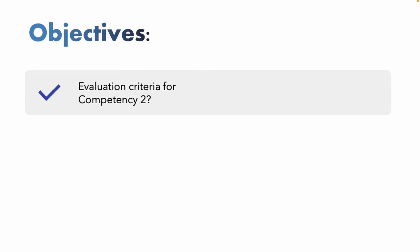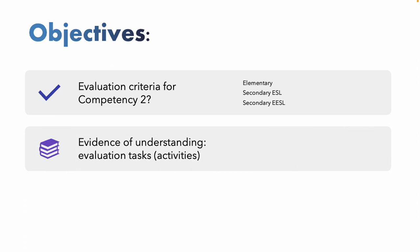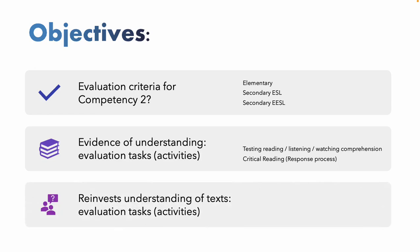Here are some of the things we're going to cover in this video. First, we'll look at the evaluation criteria according to the programs for elementary, secondary English second language, and secondary enriched. Then we'll dig into evidence of understanding, how to evaluate it, and activities to test reading, listening, and watching, and how to engage critical reading through the response process. Finally, we'll look at how to reinvest understanding of texts, including evaluation alternatives to book reports and reinvestment tasks, and how this evaluation criteria links to the other two competencies in ESL.